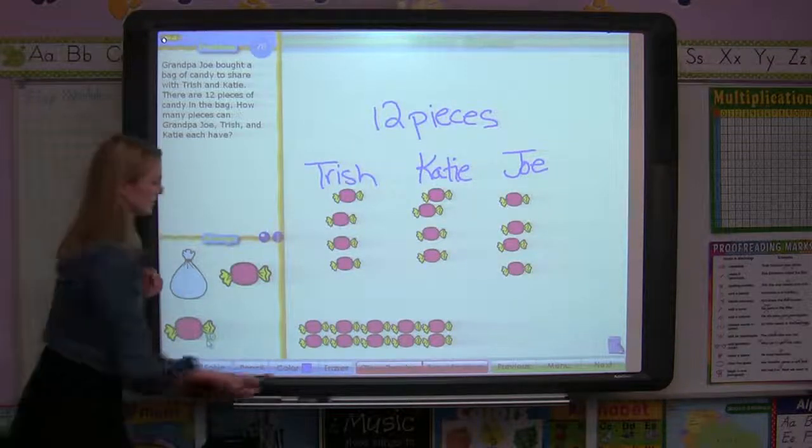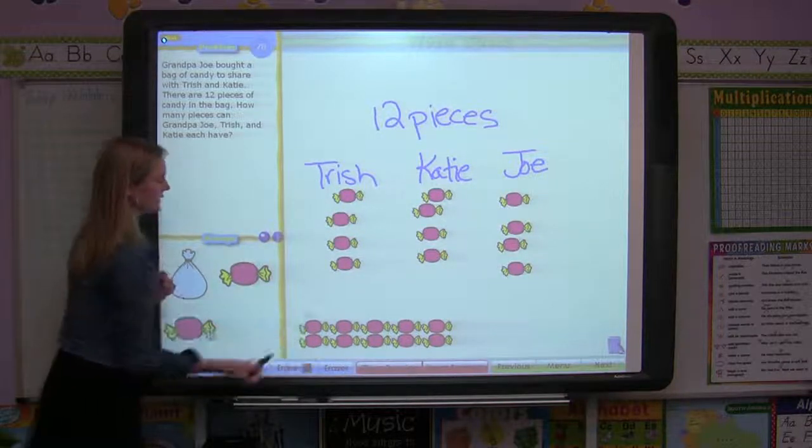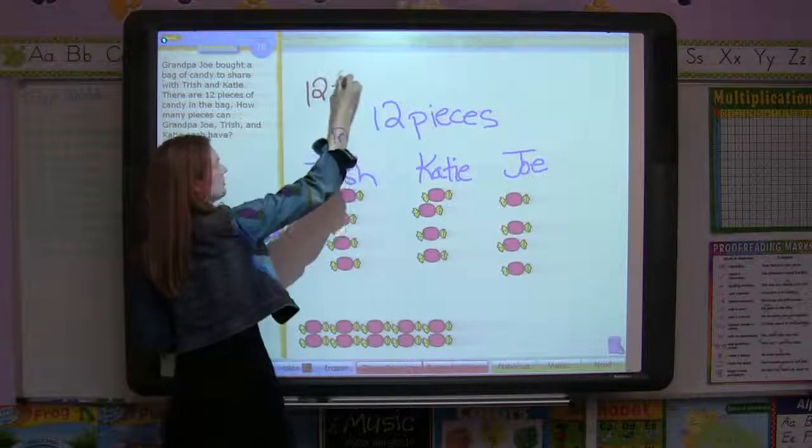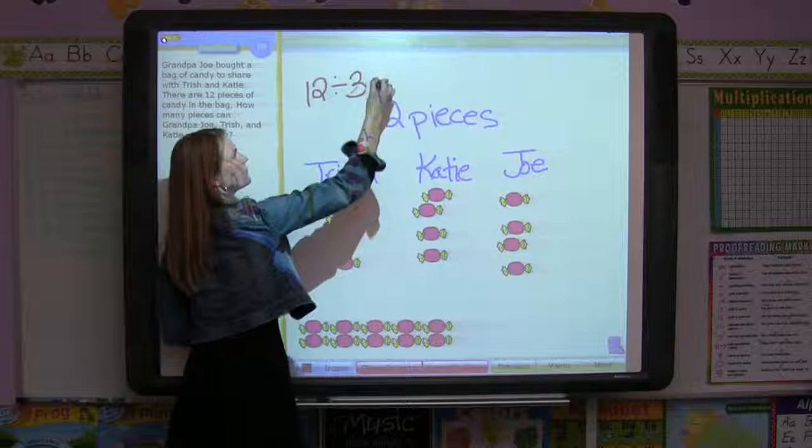Now I would then change the color and show my students that this problem can actually be solved like this too. 12 divided by 3 people equals 4.